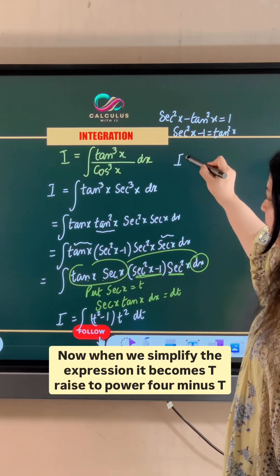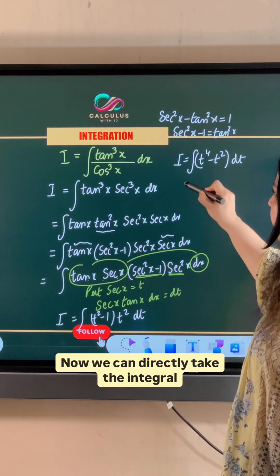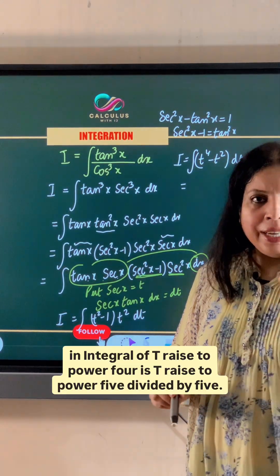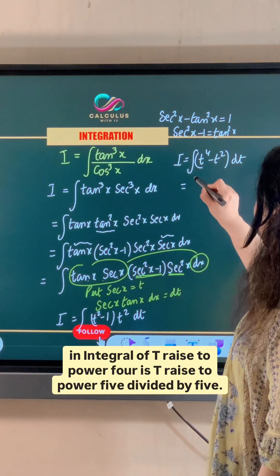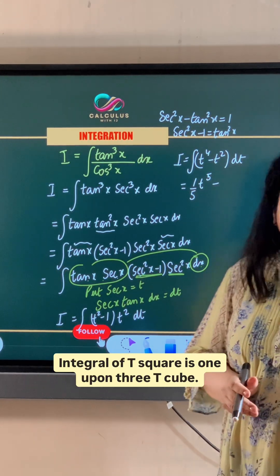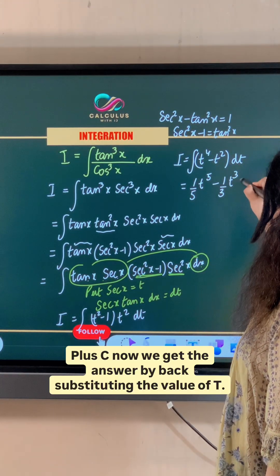Now when we simplify the expression, it becomes t raised to power 4 minus t square dt. Now we can directly take the integral. Integral of t raised to power 4 is t raised to power 5 divided by 5. So 1 upon 5 t raised to power 5 minus integral of t square is 1 upon 3 t cube plus c.